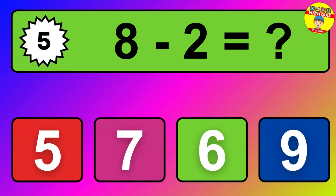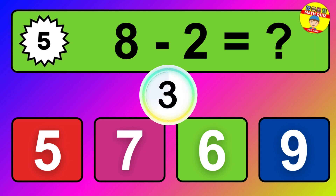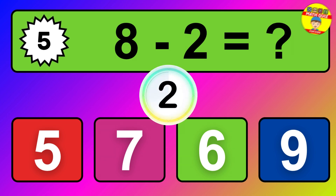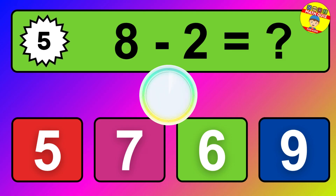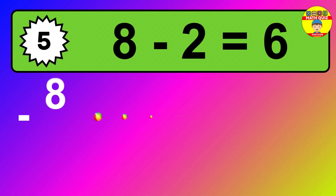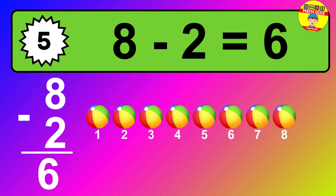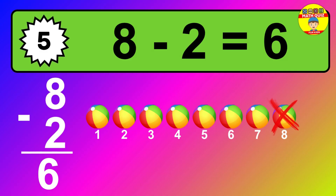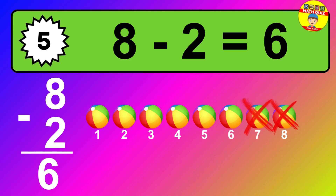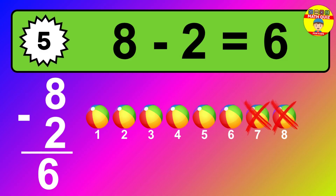Question five: eight minus two equals what? So the answer is eight minus two is six. Let's count it: one, two, three, four, five, six.